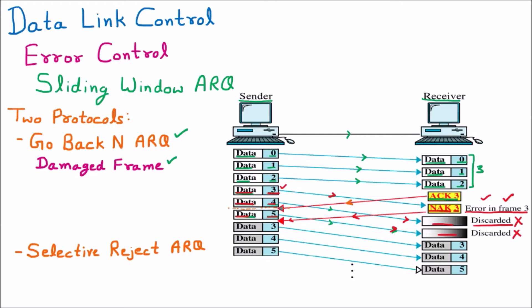The negative acknowledgement is received by the sender at a particular time. Earlier acknowledgement was for 3 packets, meaning the receiver already informed the sender those 3 packets were received. Now, with Go Back N, upon receiving the NAK, the sender goes back N — all the way back to packet 3, which was the corrupted frame. The sender already transmitted frames 3, 4, and 5, so all these frames are resent.